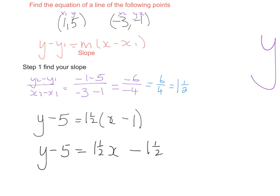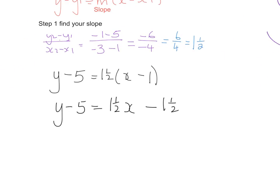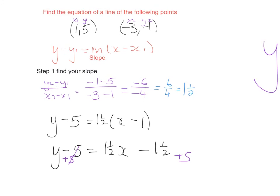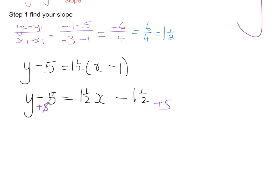And again we want it to be in the form y equals mx plus c which means we want to really get rid of this minus 5 so I can do it by balancing. So if I put a plus 5 here and a plus 5 here they will go and what I'll find is that my final equation is y is equal to 1 and a half x and then minus 1 plus 5 is going to be plus 3.5.